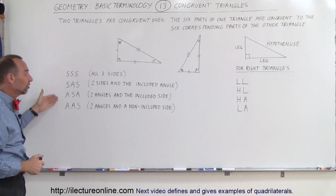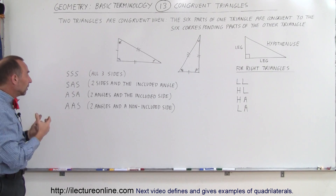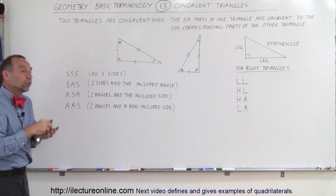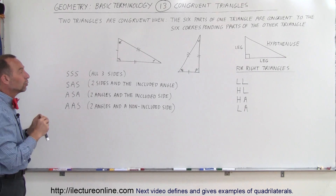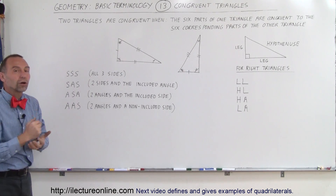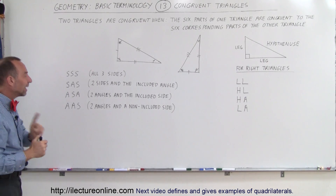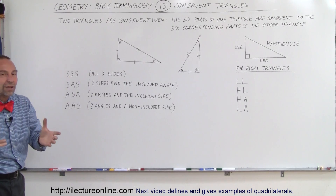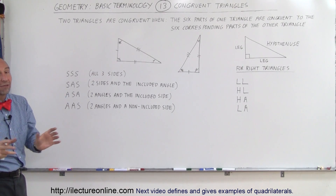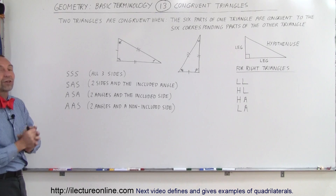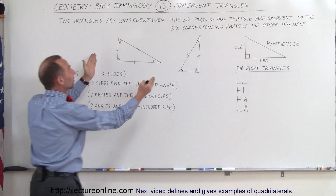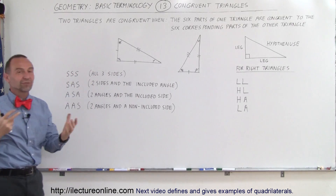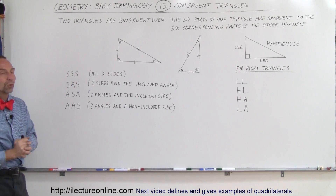So it is sufficient to show that any three parts — be it three sides, two sides and an angle, or two angles and a side — are equal to one another, and then the two triangles are congruent. One case that does NOT work: if the three angles of one triangle are congruent to the three angles of the other triangle, that does not guarantee congruence. You can have one very tiny triangle and one very big triangle with the same angles, and those triangles are definitely not congruent.